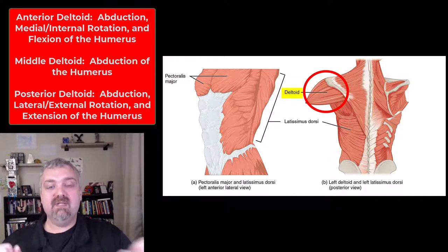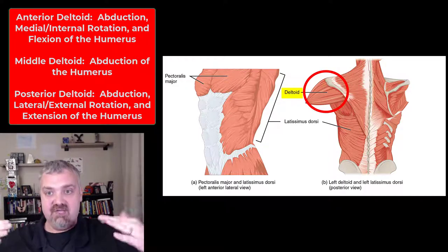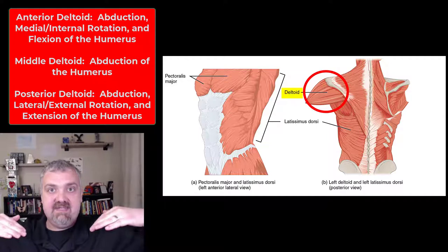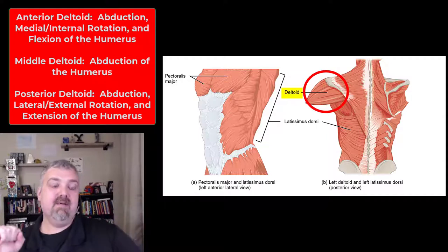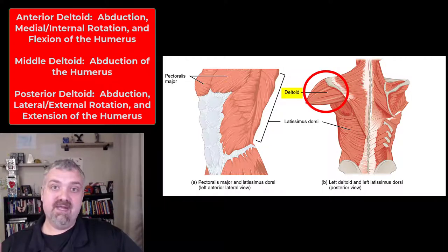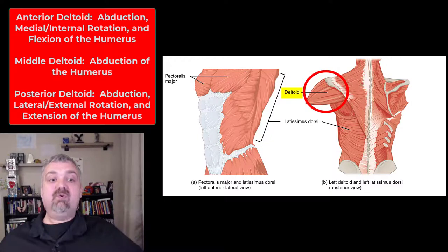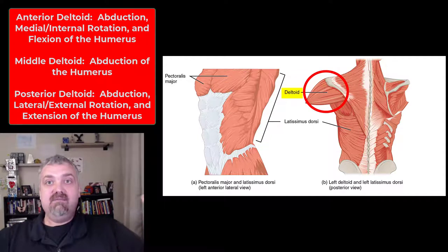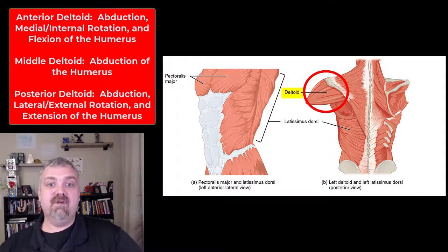The middle delt is really just abduction, because it's straight out to the outside and it abducts there. Then the posterior deltoid, because the muscle fibers are running in the back, is going to be abduction, lateral rotation, and extension. So there are some extra functions there.